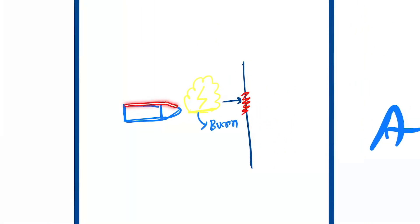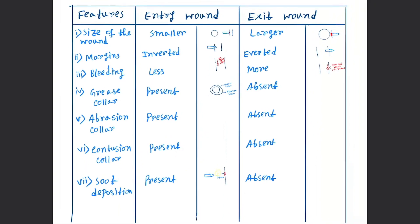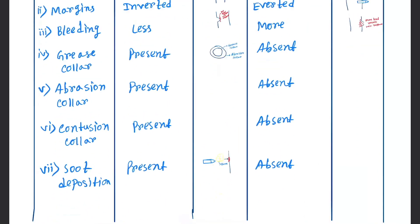In entry wound, the bullet, due to its burning property, will cause deposition of soot around the entry wound. But in case of exit wound, the soot deposition is absent.